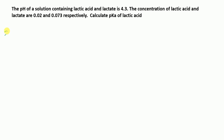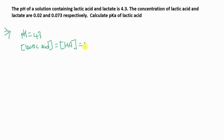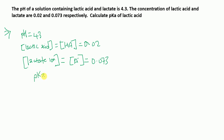This is a problem in the Henderson-Hasselbalch equation. We have the pH of the buffer containing lactic acid and lactate, which is 4.3. The concentration of lactic acid, written as [HA], is 0.02, and the concentration of lactate ion, written as [A⁻], is 0.073. We need to find pKa.